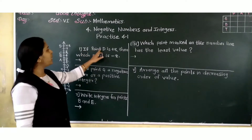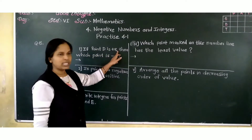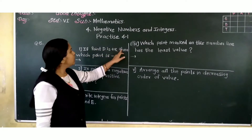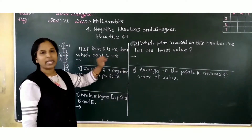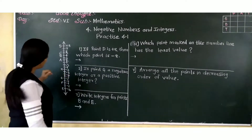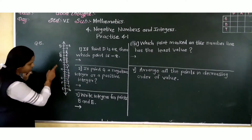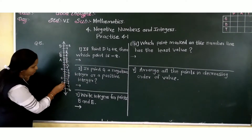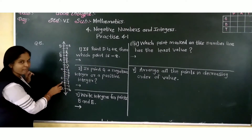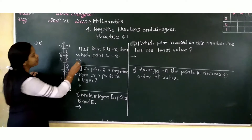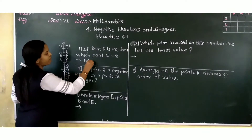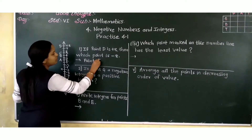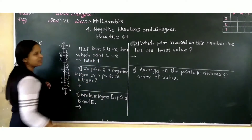Now let us solve the questions. If point B is plus 8, then which point is minus 8? Which point is minus 8? See the negative integer side — point F is minus 8.